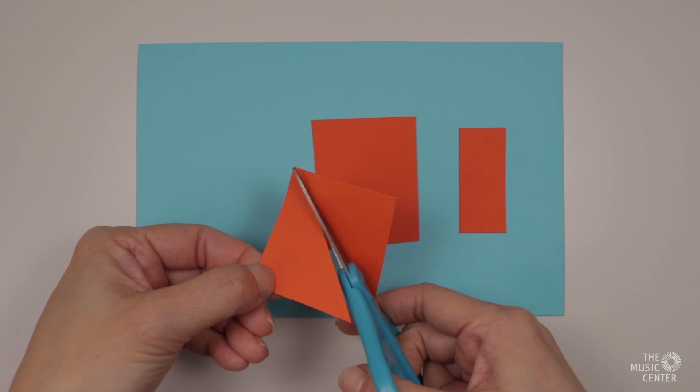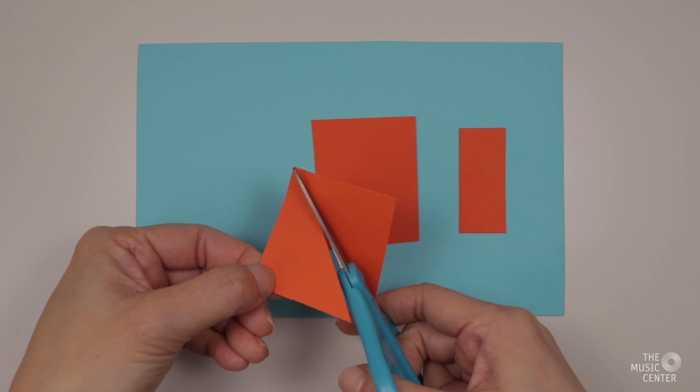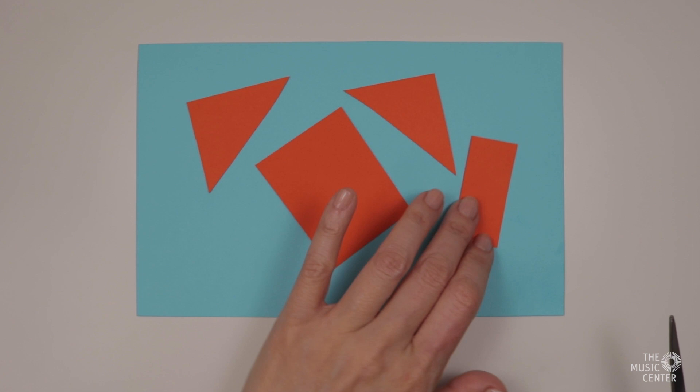Now I'll cut some triangles by making a diagonal cut through one of my squares or rectangles. And I'll make more different sized pieces too.